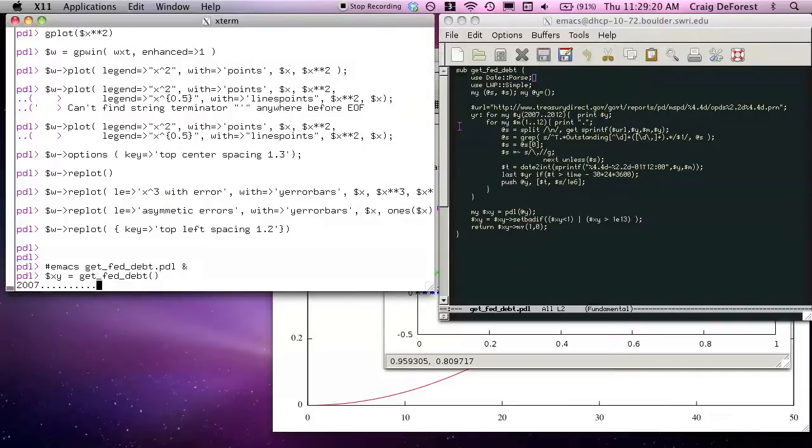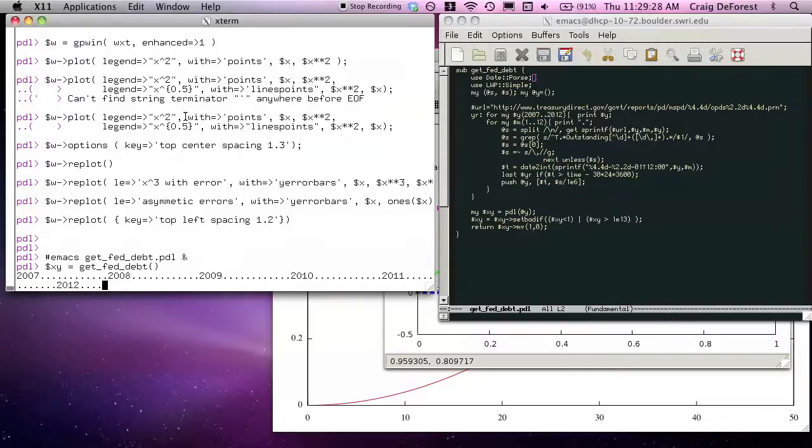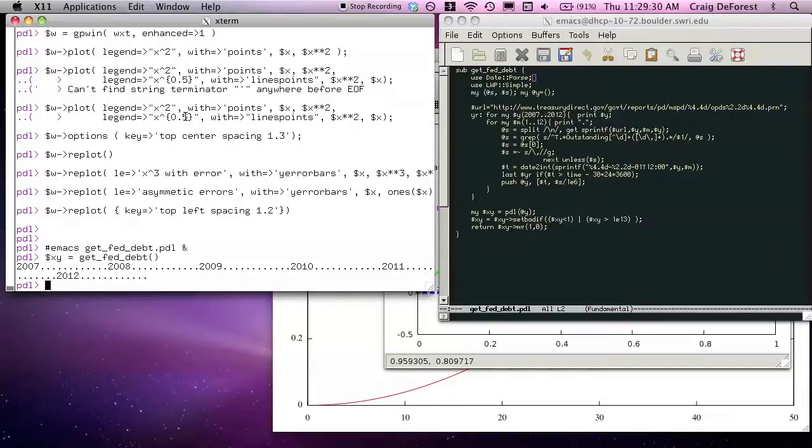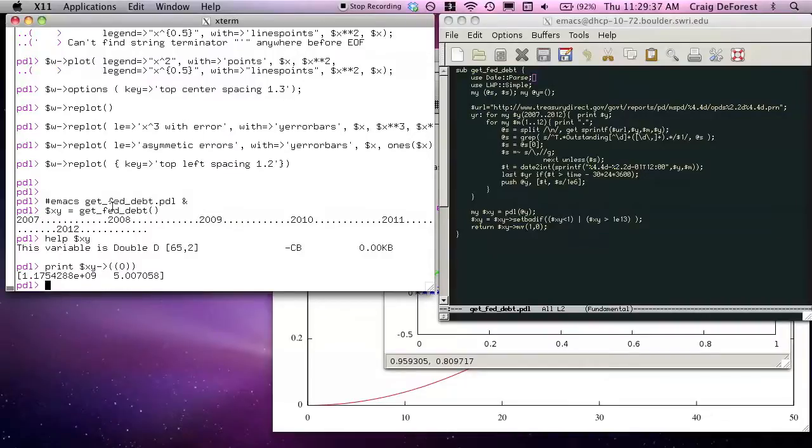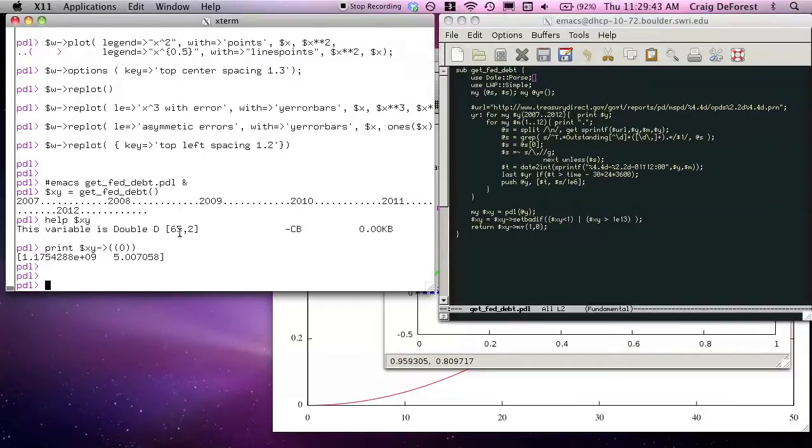And what it's going to do is just for each month between 2007 and the present, it'll go off and scrape the value of the debt in trillions of dollars from the page. And we'll get back a 65 by 2 piddle. And here's a typical data pair. This is a Unix time in seconds, and this is a value of the debt in trillions. So with that, let's plot it.